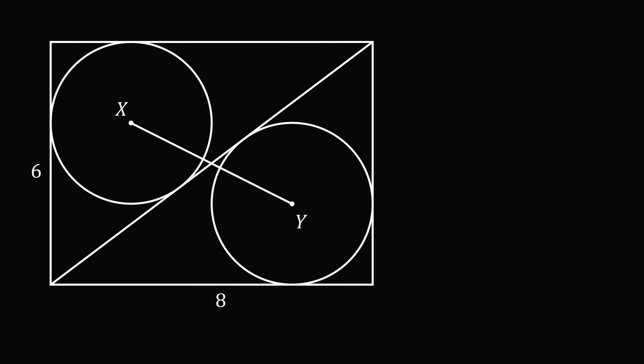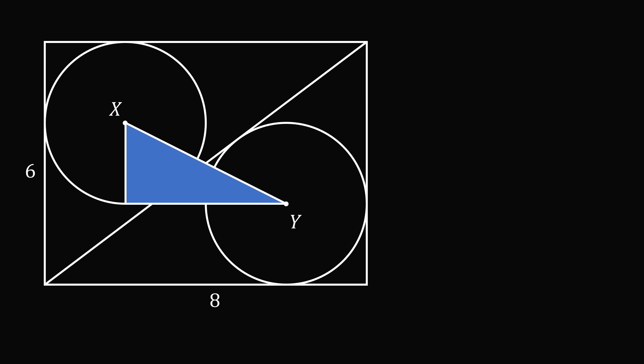Here's one way to solve the problem. Construct a right triangle where one leg is the vertical distance between X and Y, and the other leg is the horizontal distance between X and Y. Then XY is the hypotenuse of this right triangle.